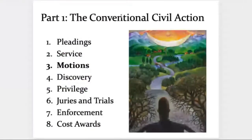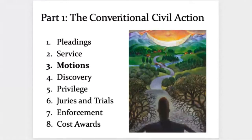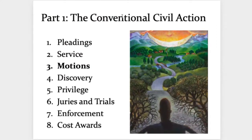So, motions. This is the third stage on our conventional civil action, this long road to justice that's going to preoccupy us for the first half of this course. The game plan today is I'm going to talk first about motions generally, then introduce the motions family tree — a view from 50,000 feet of all the different types of motions — and then talk about a couple of cases in detail, the first being Gomeshi versus CBC.